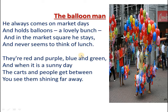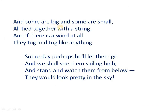Now I will recite the poem, then I will explain it. The Balloon Man: He always comes on market days and holds balloons, a lovely bunch. And in the market square he stays, and never seems to think of lunch. They are red and purple, blue and green. And when it is a sunny day, the carts and people in between — you see them shining far away. And some are big and some are small, all tied together with a string. And if there is a wind at all, they tug and tug like anything. Some day perhaps he will let them go, and we shall see them sailing high, and stand and watch them from below — they would look pretty in the sky.